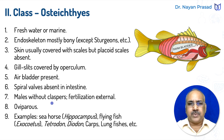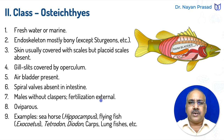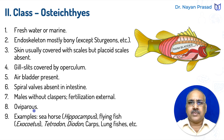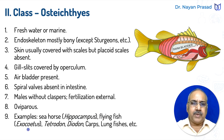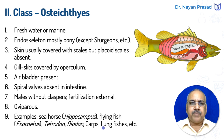Males are without claspers in bony fishes, and that is why fertilization is external, taking place outside the body in water. They are all oviparous, laying eggs. Examples of bony fishes include seahorse (scientific name Hippocampus), flying fish (scientific name Exocoetus), Tetradon, Diodon, carps such as Labio and Cirrhina, freshwater carps, and lungfishes — all are class Osteichthyes.